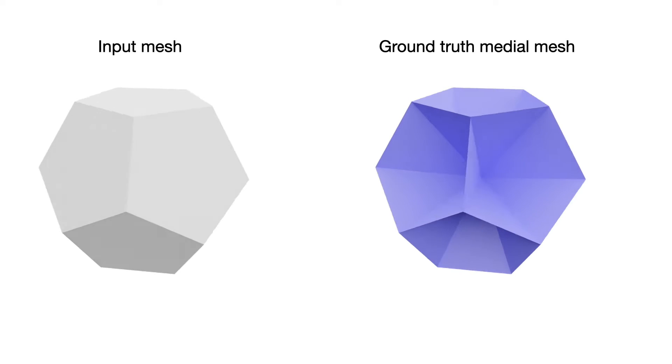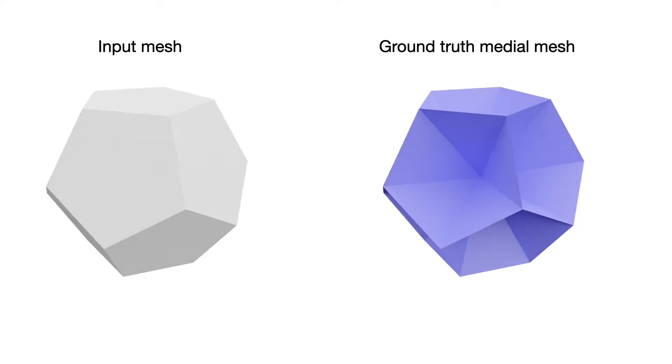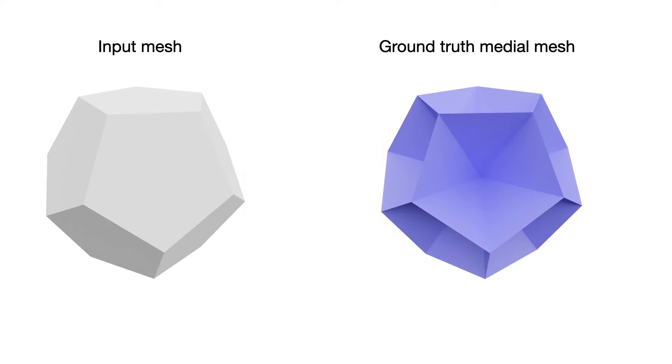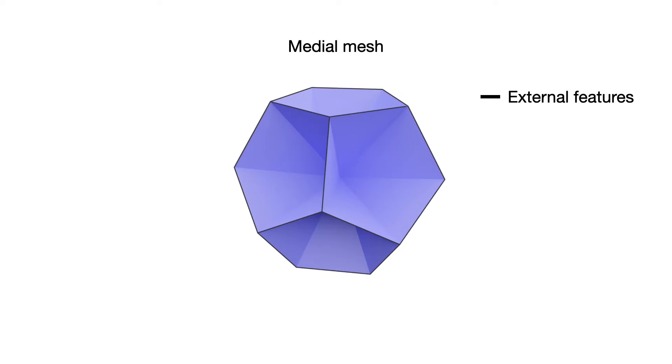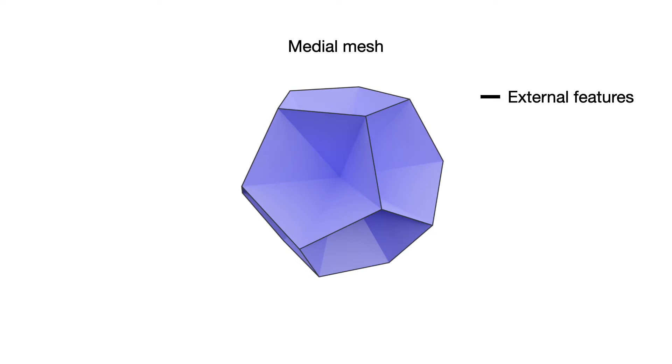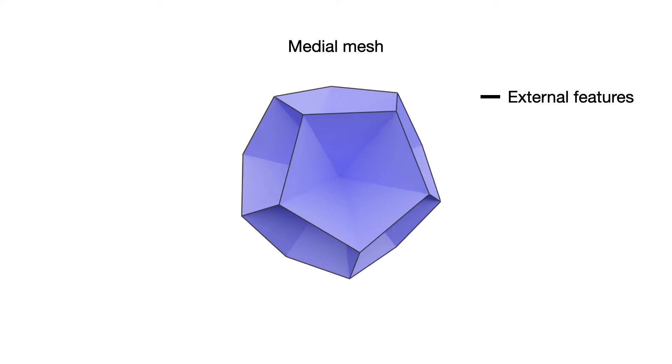We have observed that medial features play an important role in guaranteeing many topological and geometric properties of medial axis. External features such as sharp edges and corners of the input represent the non-smoothness of the surface.